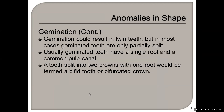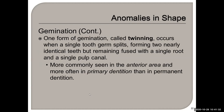The result is twin teeth, but in most cases geminated teeth are only partially split. They usually have a single root with a common pulp canal and a bifurcated crown. Twinning or gemination is more commonly seen in the anterior area of the primary dentition.